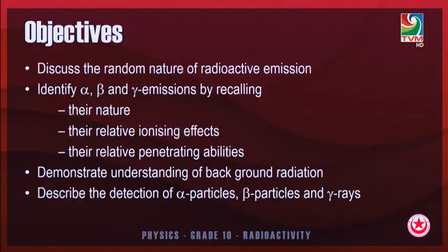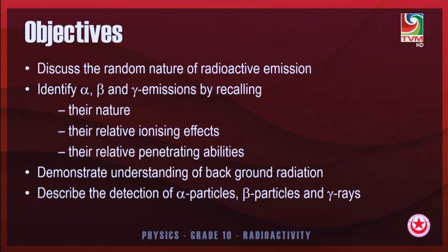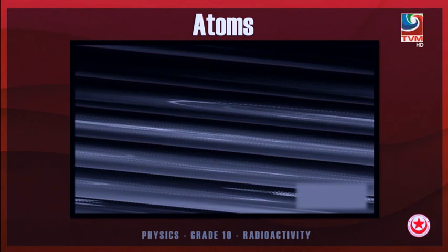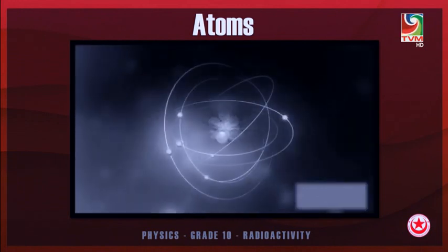By the end of this lesson, you should be able to discuss the random nature of radioactive emission, identify alpha, beta, and gamma emission by recalling their nature, their relative ionizing effect, their relative penetrating abilities, demonstrate understanding of background radiation, and describe the detection of alpha, beta, and gamma rays.